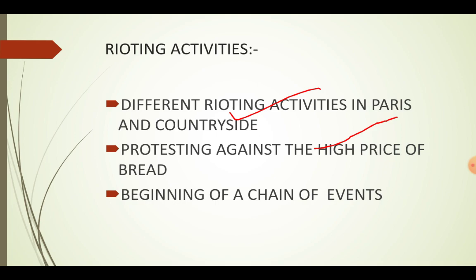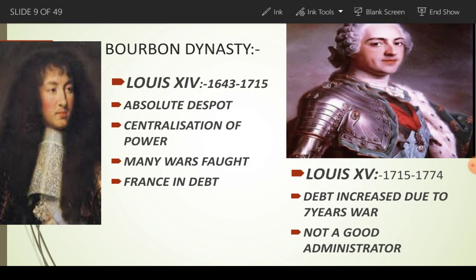Lagta hai aap logon ko yeh story samajh nahi aayi — kyunki is story ko maine mid se start kiya tha. Toh chaliye flashback mein chalte hain. Thirteenth century mein France par Bourbon dynasty rule karti thi. Unka king Louis XIV ek absolute despot tha aur saari power ko apne control mein rakhta tha. Unhone bahut saare yudh lade, jiski wajah se France par kaafi dapt aa gaya.